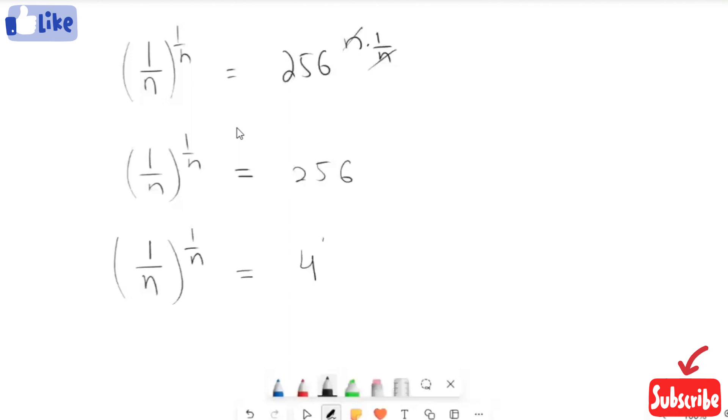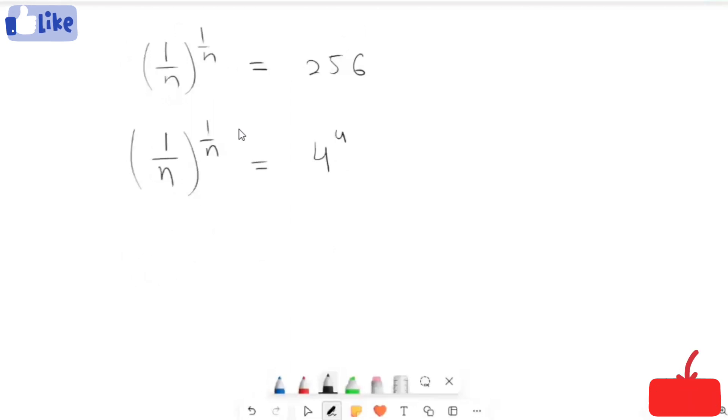4 raised to power 4. Now here, we have the same base and same power on both sides. So we can easily compare: 1 over n is equal to 4.